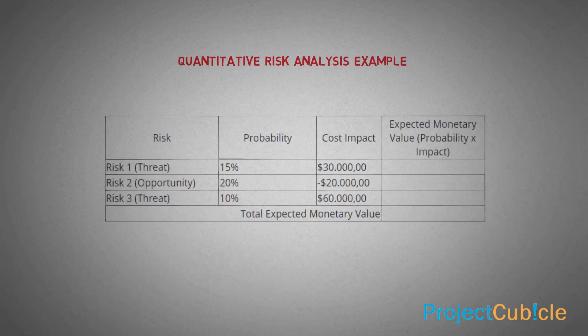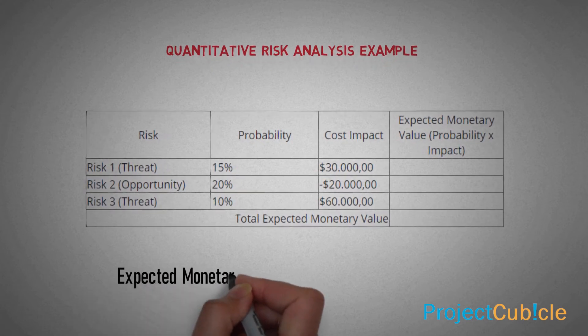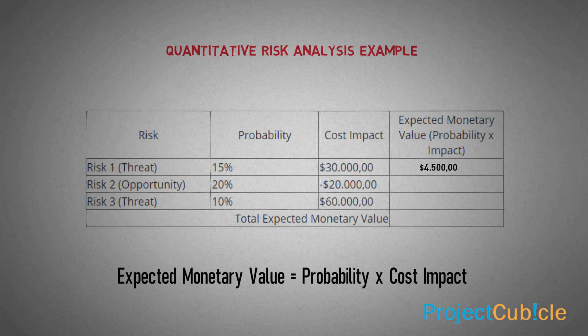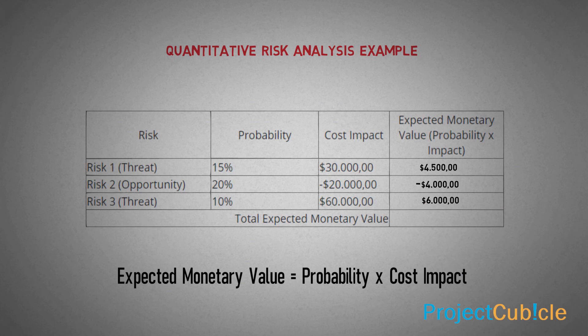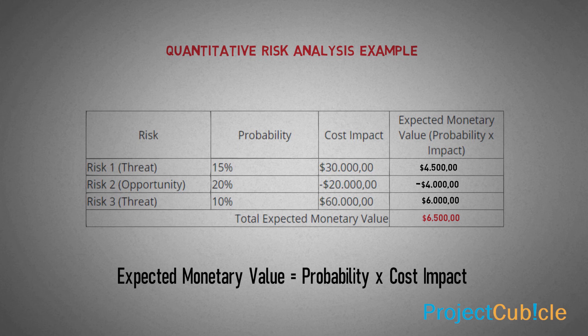In this quantitative risk analysis example, we will use the expected monetary value (EMV) technique to calculate the project risk exposure and the contingency reserve. EMV equals probability times cost impact. For Risk 1, a threat, probability times impact is $4,500. For Risk 2, an opportunity, probability times impact is -$4,000. For Risk 3, a threat, probability times impact is $6,000. The total expected monetary value is $6,500.